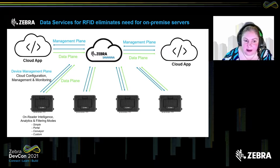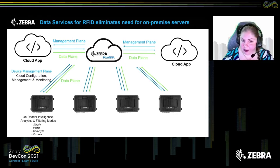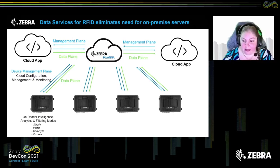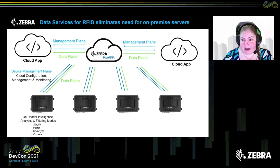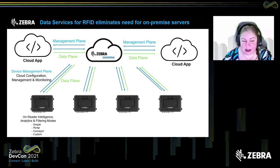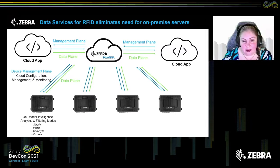Once connected to the Zebra Savannah cloud, we provide standard REST APIs that allow you to both manage the readers and get data from the readers — the actual read information being pushed out to your different applications or somebody else's application. This provides that level of complexity where we're sharing information across the supply chain, depending on how your customer wants it shared.